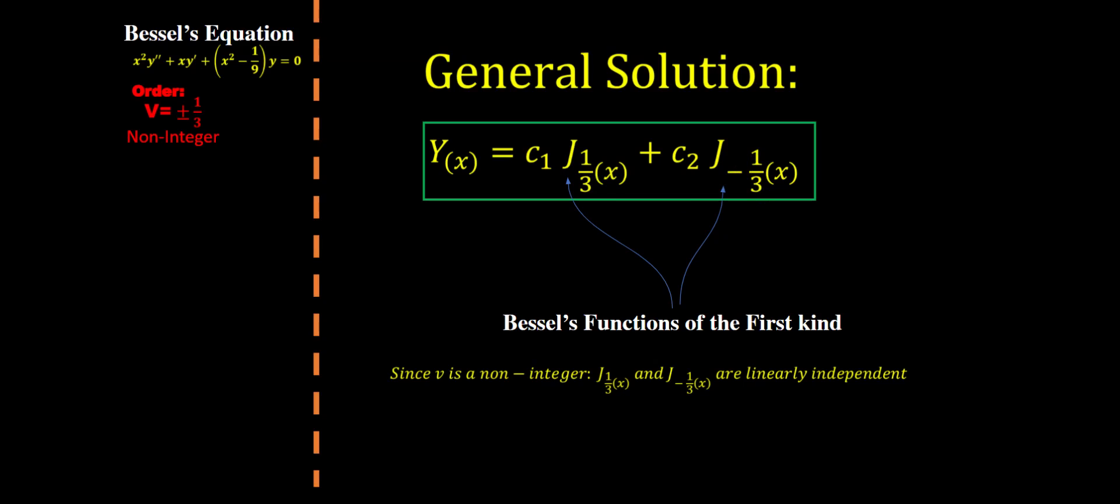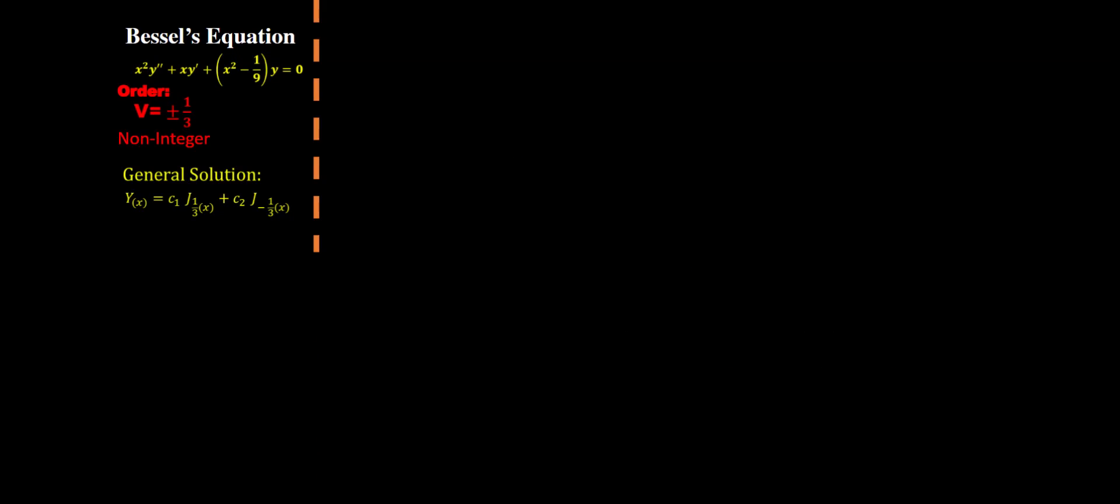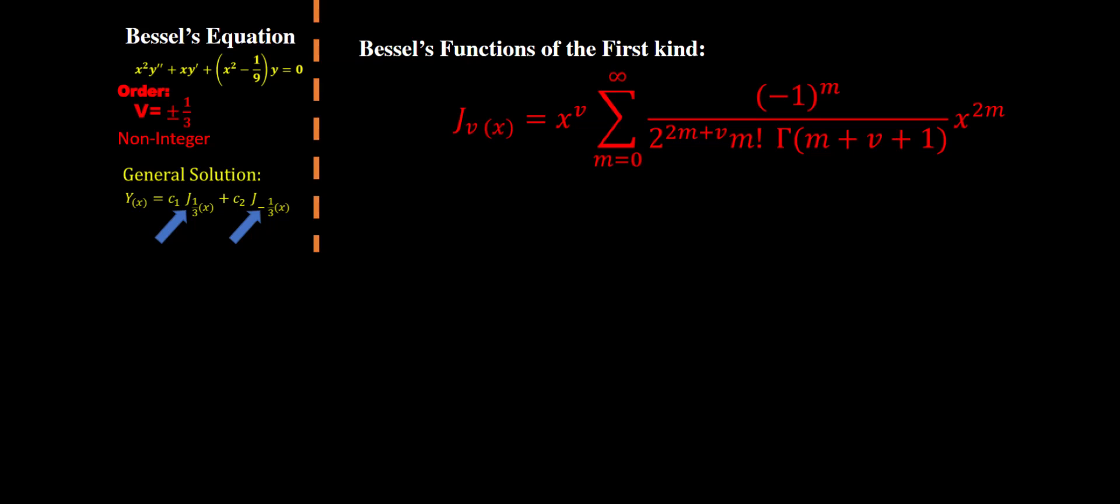A lot of times in math classes we just leave it as is and this is good enough, but in this video we're gonna continue. So what are these j functions? These are Bessel functions of the first kind. Here's their formula. This is what they actually mean.